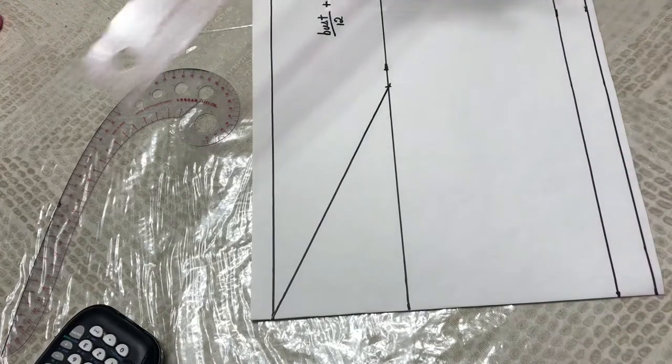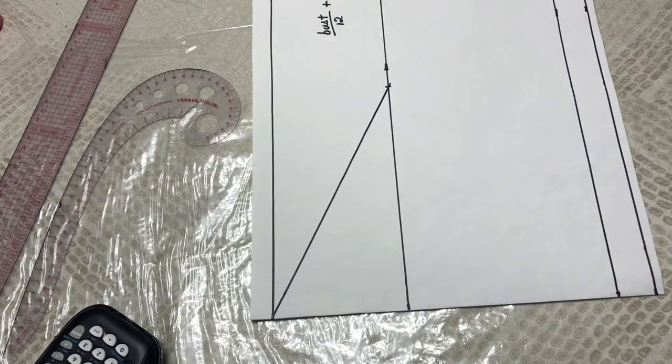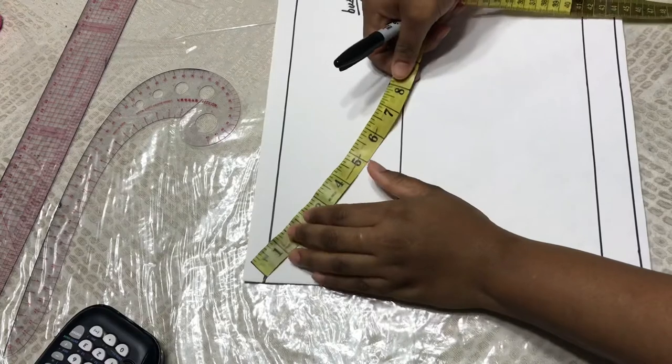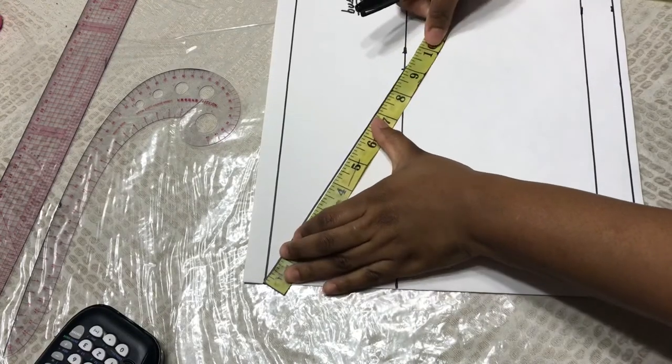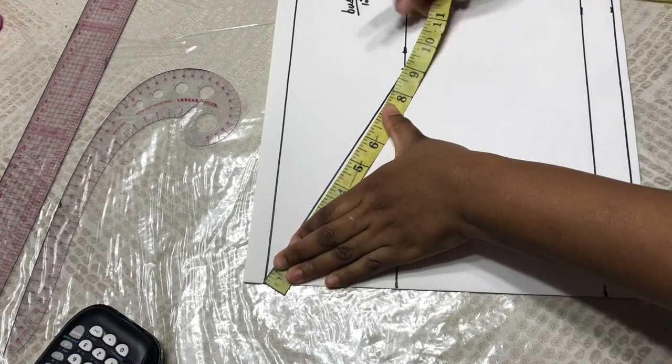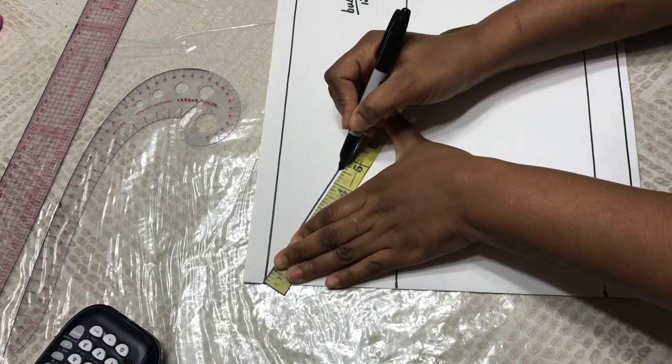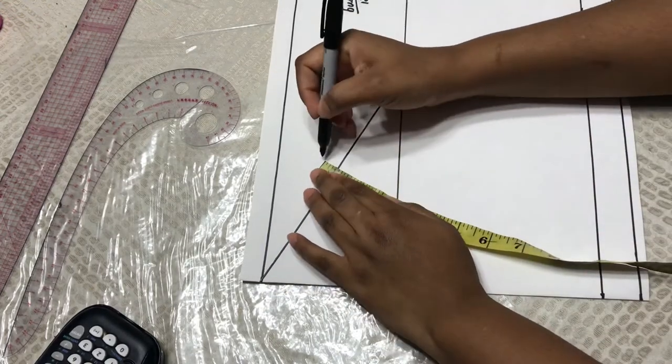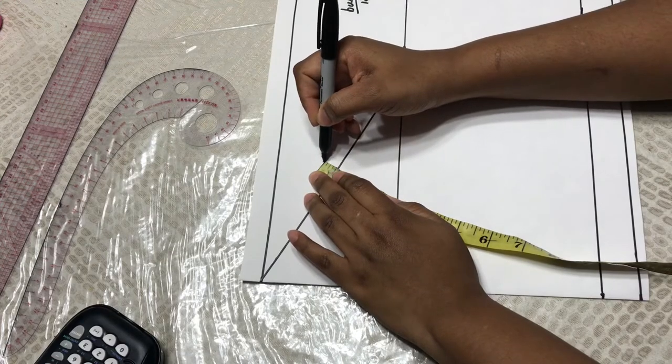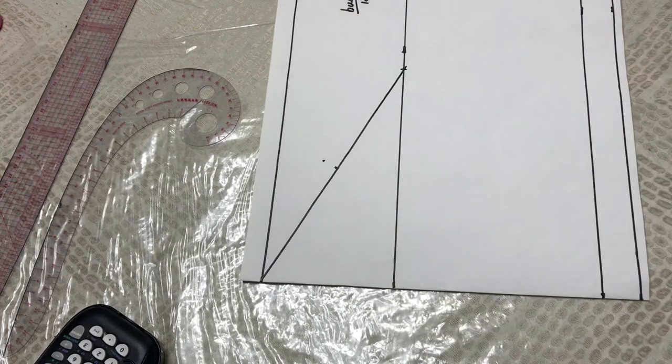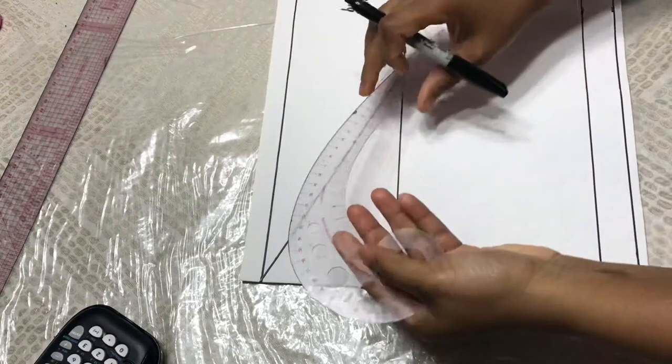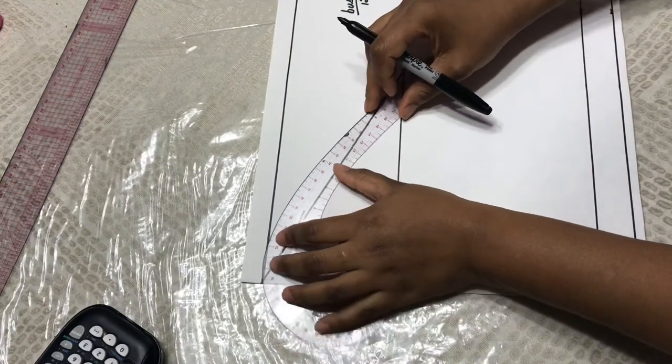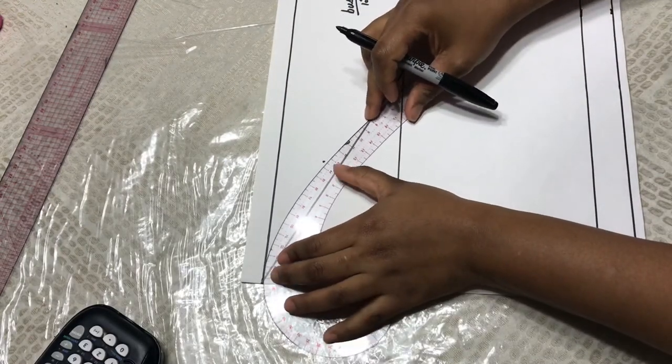When you do that, you are going to find the midpoint of this line. Mine is about 9, the midpoint of 9 is 4.5. At your midpoint, you are going to go up half an inch, and then you're going to take your armhole curve and you're going to make a curve from that half an inch point.